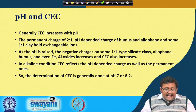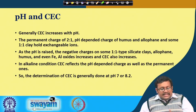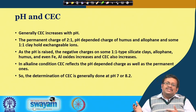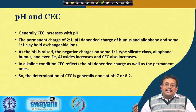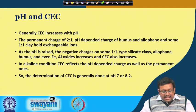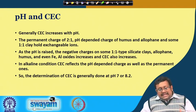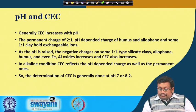In alkaline conditions, CEC reflects the pH-dependent charge as well as the permanent charge. Permanent charge is permanent; however, in alkaline conditions it will also develop a pH-dependent negative charge, so ultimately it will be a total of both permanent charge and pH-dependent charge. The determination of CEC is generally done at pH 7 or 8.2.